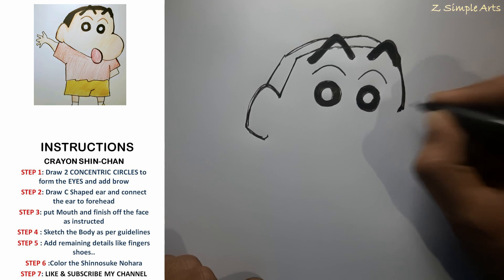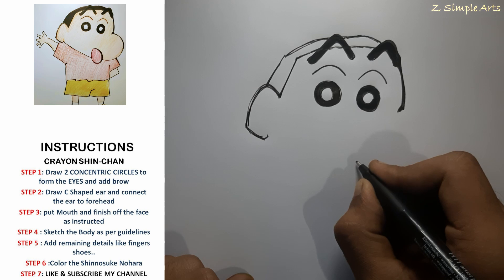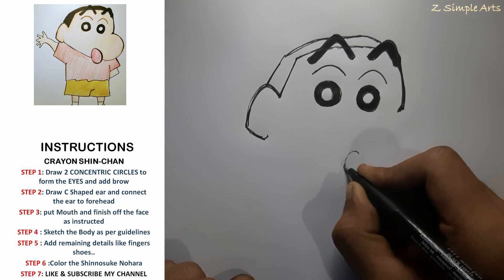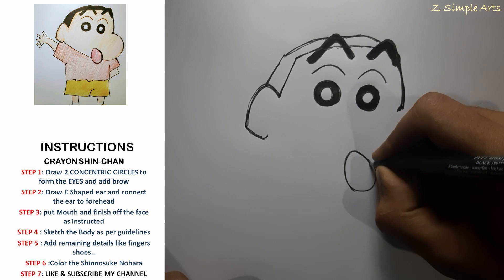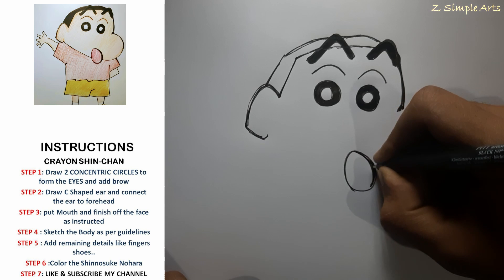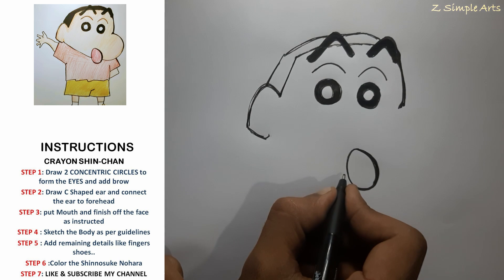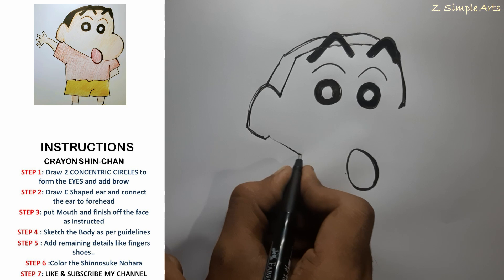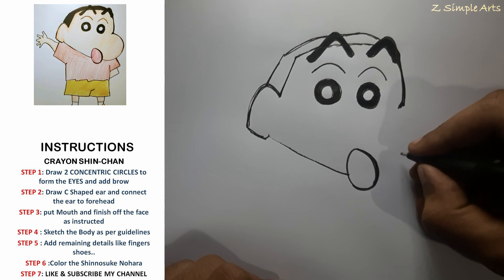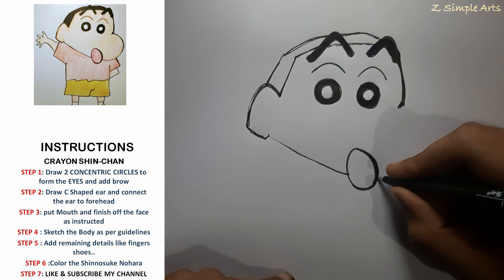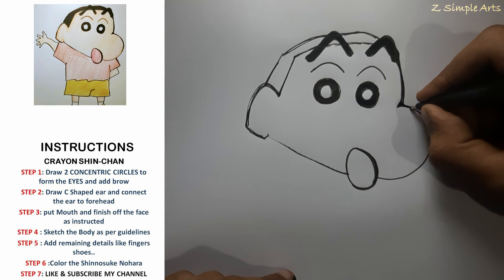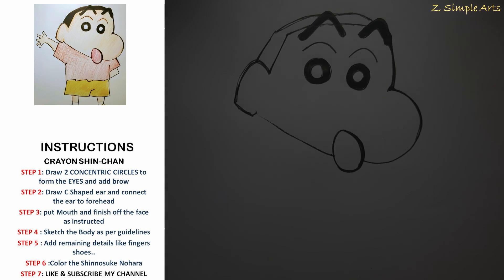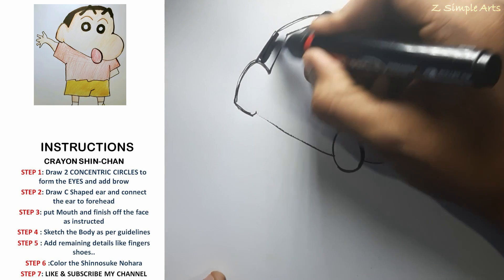And from here draw a wide deep circle. Connect these two points. So now we'll be filling the color, the hair color black.